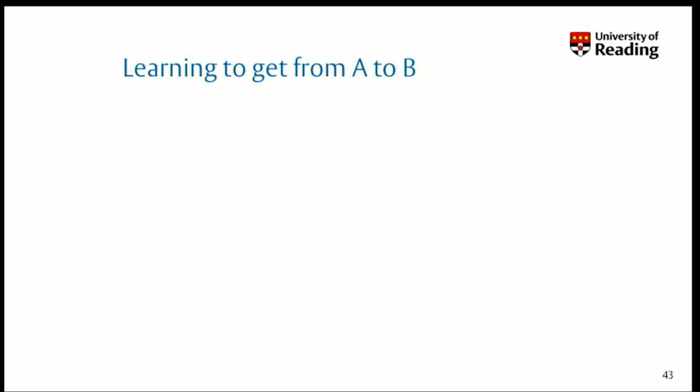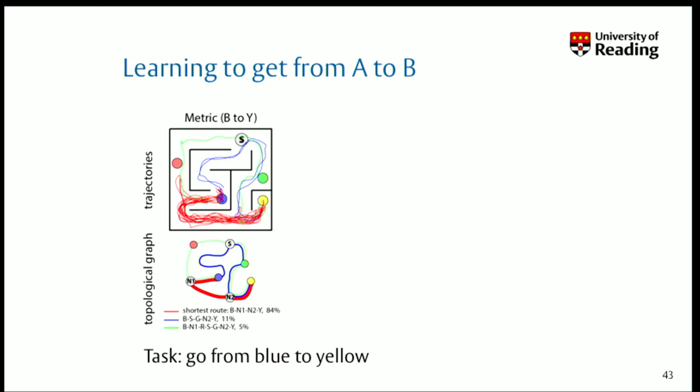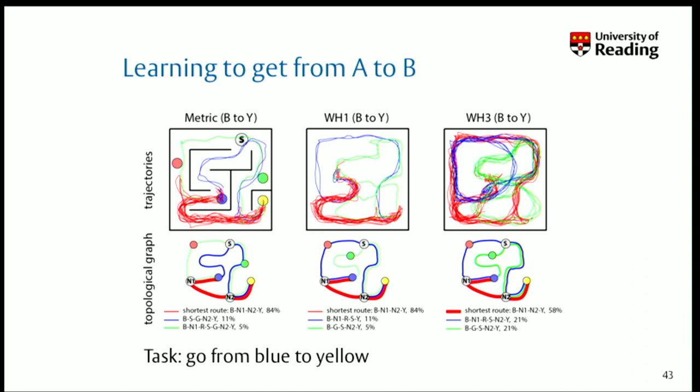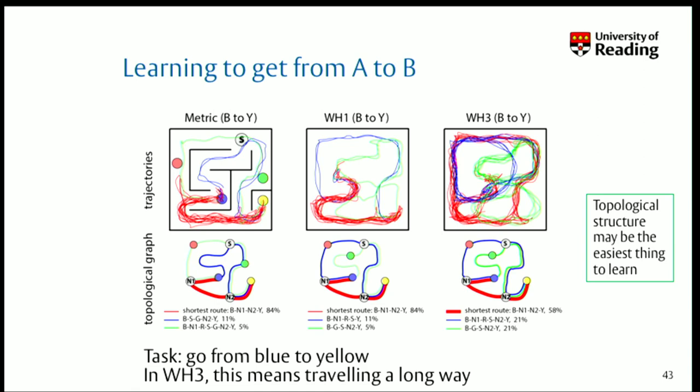One task — which I won't analyze in detail — is learning to get from A to B. Briefly: in the metric environment, with nothing funny going on, participants have to go from blue to yellow and mostly they do. With one wormhole they still succeed. With three wormholes, they mostly do go from blue to yellow topologically, but metrically they do a lot of walking around. They usually choose the shortest topological route — so the topological structure may be the easiest thing for participants to learn.